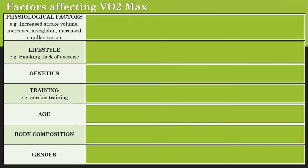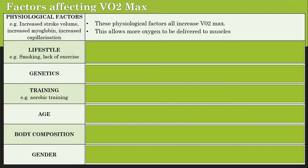We need to know the factors that affect a person's VO2 max. Physiological factors all increase VO2 max as a result of aerobic training. For example, increased stroke volume and increased myoglobin — anything to do with getting more oxygen to the muscles — means we'll have a higher VO2 max.